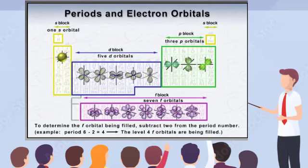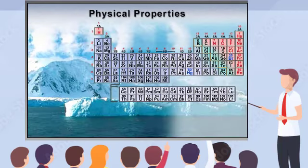To see the electron configuration for any element at any time during this program, simply click on the periodic table button at the bottom of your screen. Now that you understand the arrangement of the periodic table, you can learn the trends it reveals in physical and chemical properties of the elements.